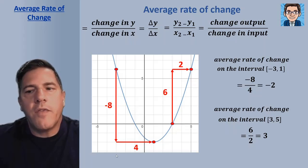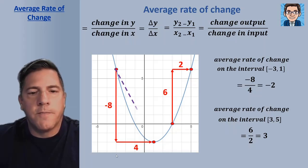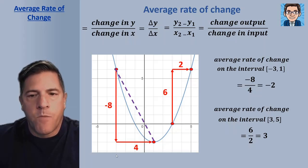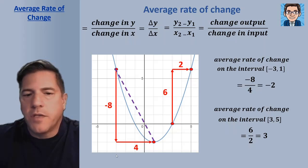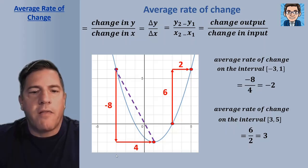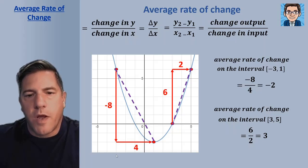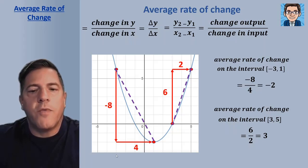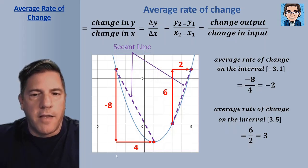Another way to look at those is to connect the two points and find the slope of that line. The slope of the first line is negative 2 and the slope of the other is 3. The slope of the line gives us the average rate of change, and we call those lines secant lines.